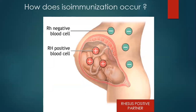What happens is: you have a mother who is Rhesus negative and a partner who is Rhesus positive. They have a Rhesus positive baby. The baby's red blood cells seep through into the maternal circulation. These red blood cells cause production of antibodies — IgM at the beginning. IgG takes up to two to six months to be produced, by which time the first baby has already been born, so it goes scot-free because IgM is a big molecule that does not cross the placenta.